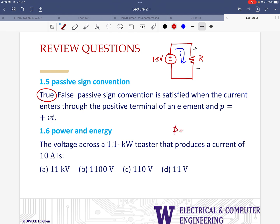Power is V times I. We need V, we have P and I. So that means that V is P divided by I. In this case, it is 1.1 K divided by 10 amps. So we are left with 1.1 times 10 to the 2, which is 110 volts.